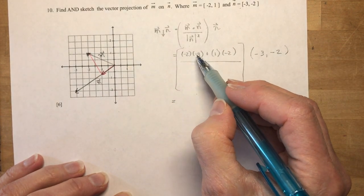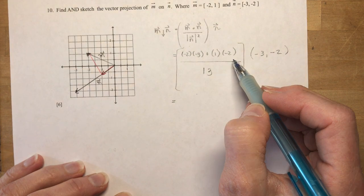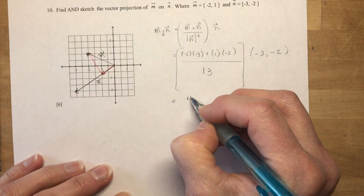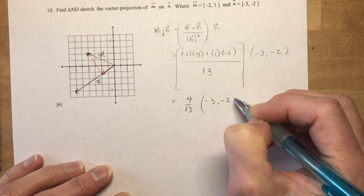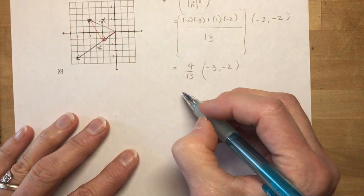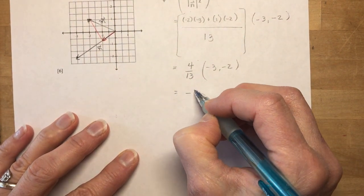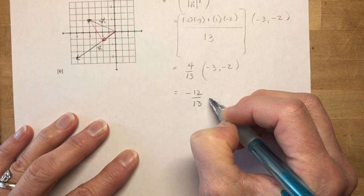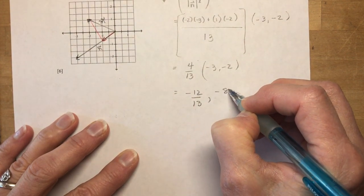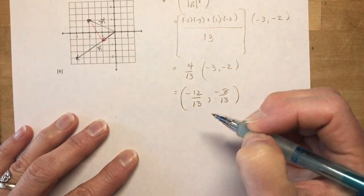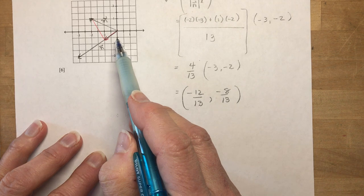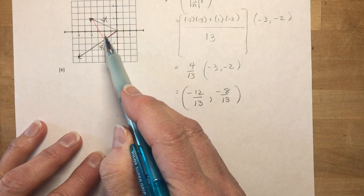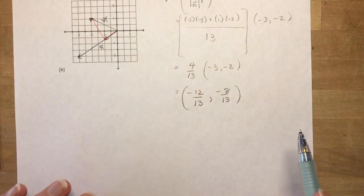And this gives me 6 minus 2 is 4. So 4 over 13 times minus 3, minus 2. Remember, these are the coordinates of my vector. So I get minus 12 over 13 and minus 8 over 13. And they need to be in brackets. It is a vector. So that's like minus 1 and just over a half. So that looks really good, doesn't it? And there you go.